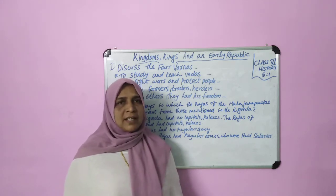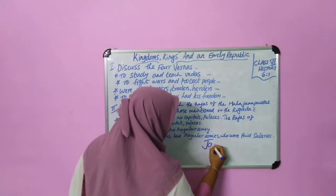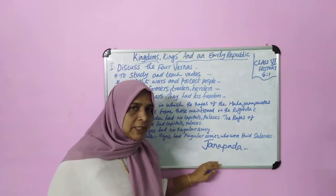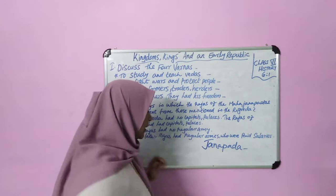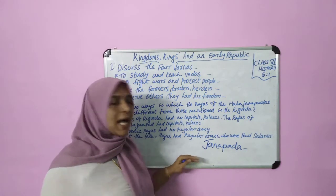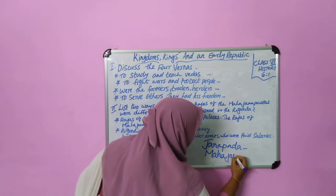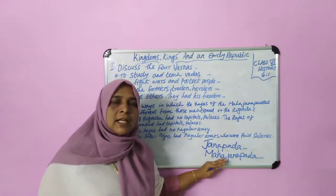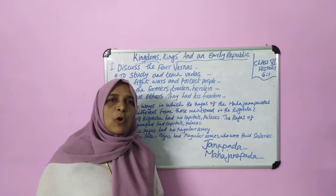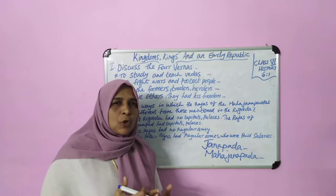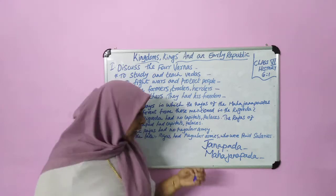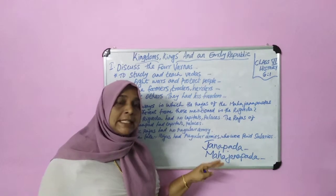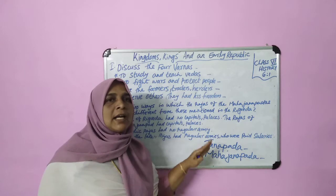The meaning of janapadas — kingdoms called janapadas, ruled by a raja. The meaning of janapada is literally 'land.' Jana means people and pada means foot or land.